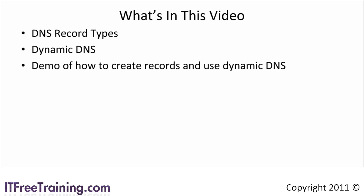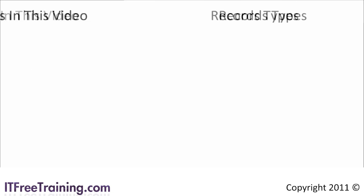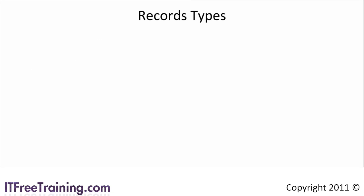With DNS there are a number of different record kinds — this is by no means a complete list but does cover the more common types. The first record is Start of Authority, or SOA. The SOA record indicates the DNS server with the best source of information for that zone.